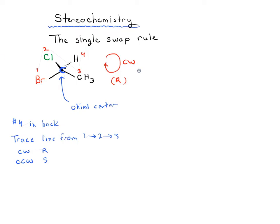What I'm going to show you here is what happens when we switch or swap any two groups on a stereo center. There are six different ways we could swap two groups among four, so let's start with the easiest one.